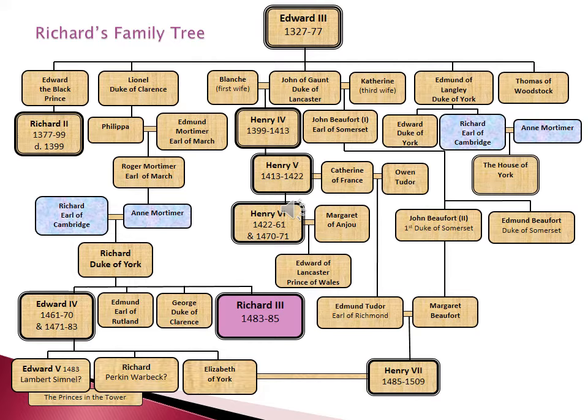Edward III's second son was Lionel, Duke of Clarence, and he too died before his father, having sired a daughter, Philippa. The third son was John of Gaunt, Duke of Lancaster, and he was the one who took on himself the assistance of young Richard II. Then there were two younger sons still: Edmund of Langley, Duke of York, and the last son, Thomas of Woodstock, who became Duke of Norfolk.